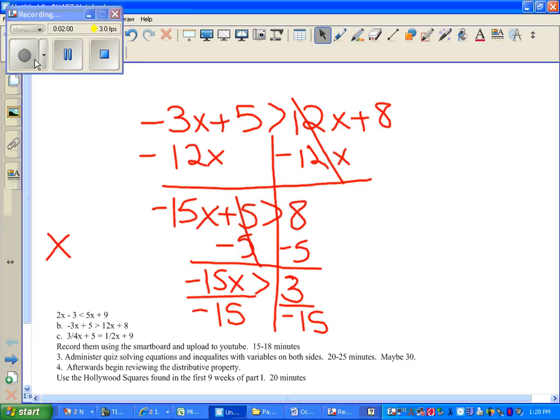Very good. X is less than, very good. X is less than because you're dividing by a negative number. X is less than, now you get a decimal, but the answer is negative 1 over 5? Yeah. That's what I'm looking for.